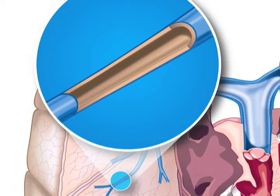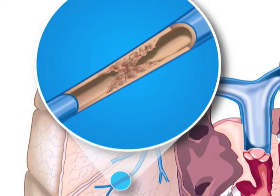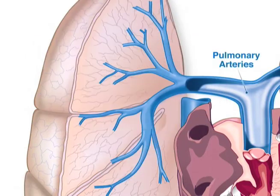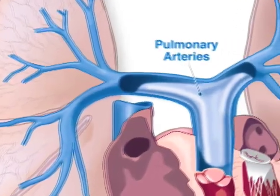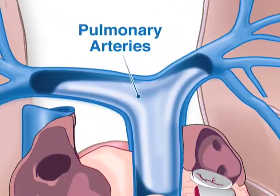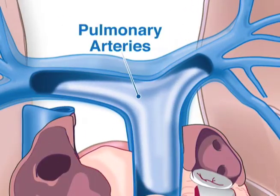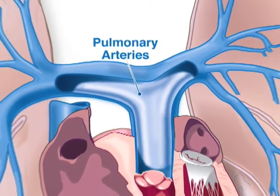In pulmonary hypertension, we see that these small pulmonary arteries become narrowed and can be scarred to the point of being closed. As well, the main pulmonary arteries enlarge, or get bigger, in pulmonary hypertension.